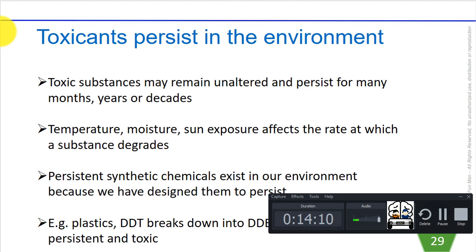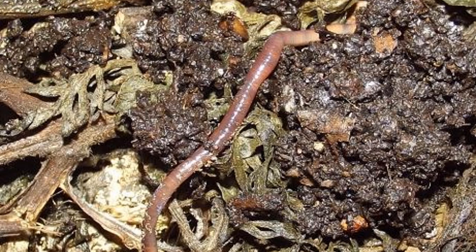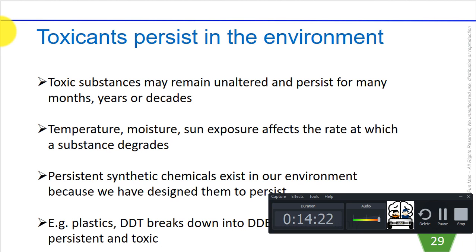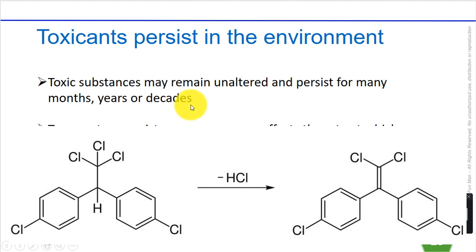Sooner or later, most substances will degrade into simpler compounds due to heat, bond breaking, and hydrolysis. We call these smaller compounds breakdown products. Although breakdown products are generally less harmful than the original substance, sometimes they can be just as toxic or even more toxic — for example, DDT breaks down into DDE, which is itself a highly persistent and toxic chemical.